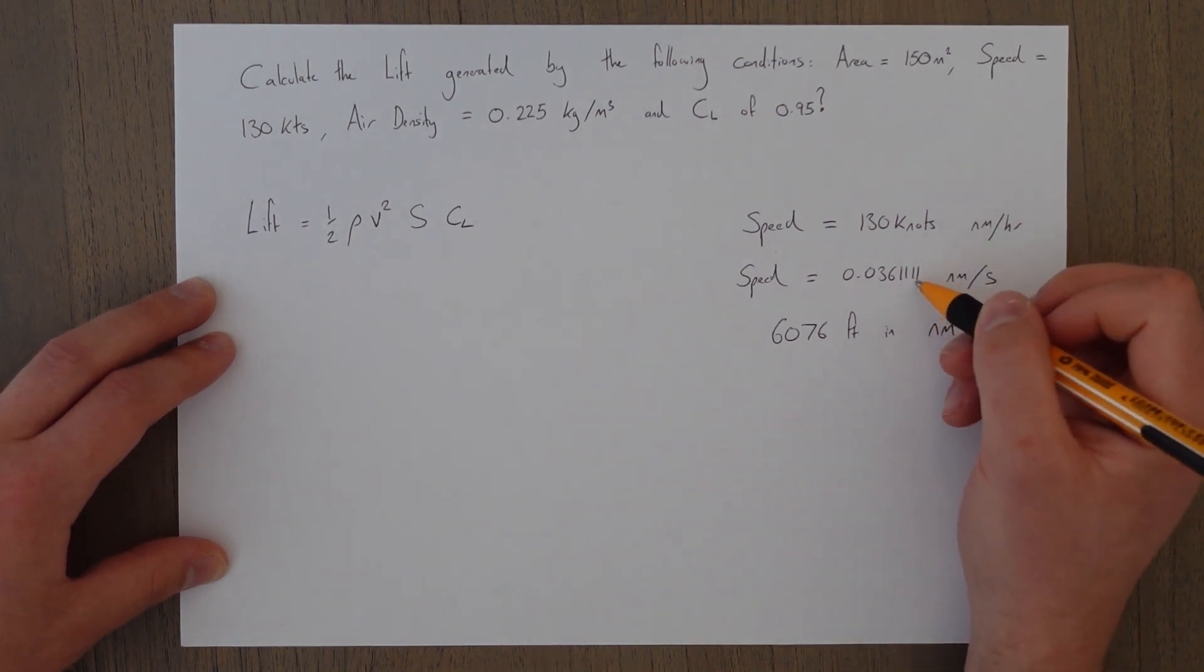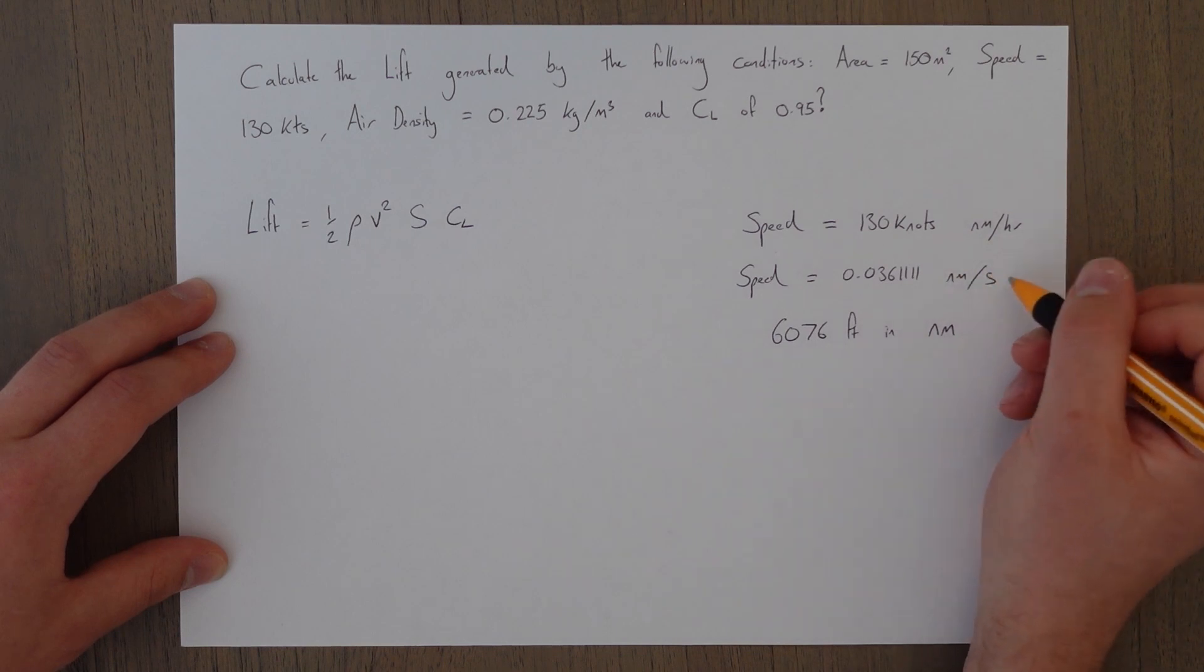So we then multiply here by 6076 and we'll get feet per second.